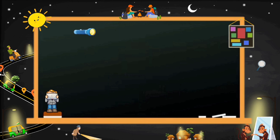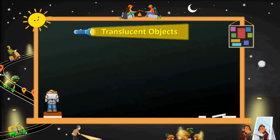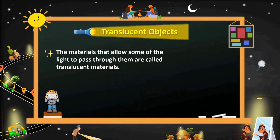Now we will see the second type of material — translucent materials. The materials that allow only some of the light to pass through them are called translucent materials.